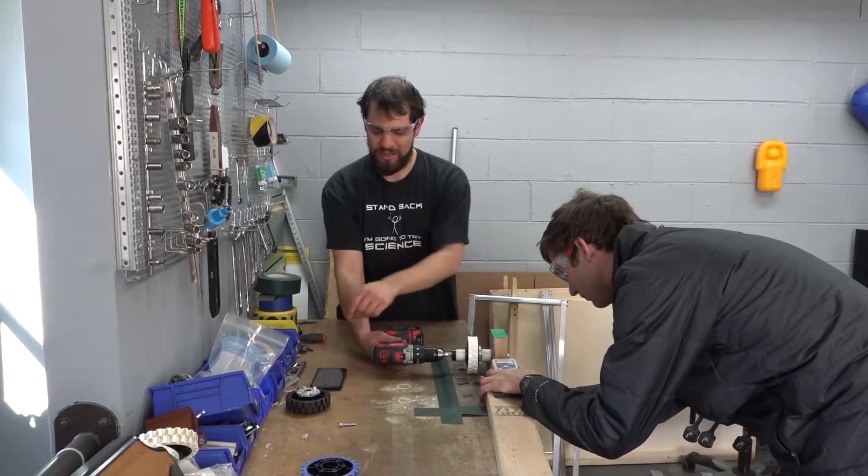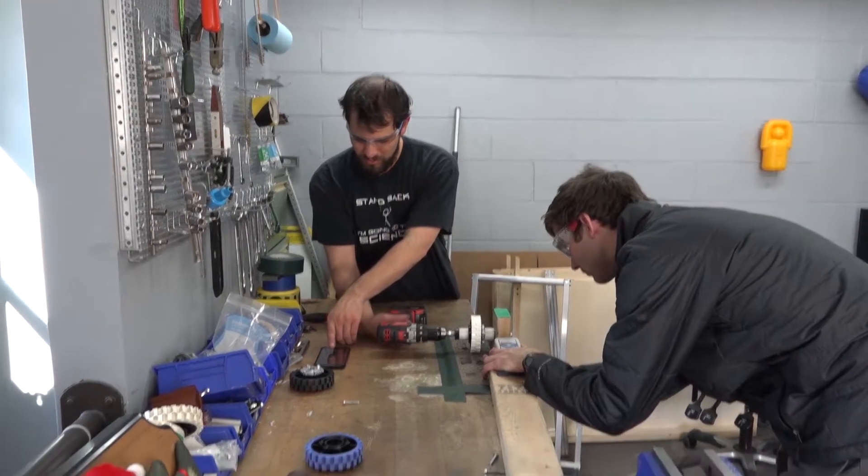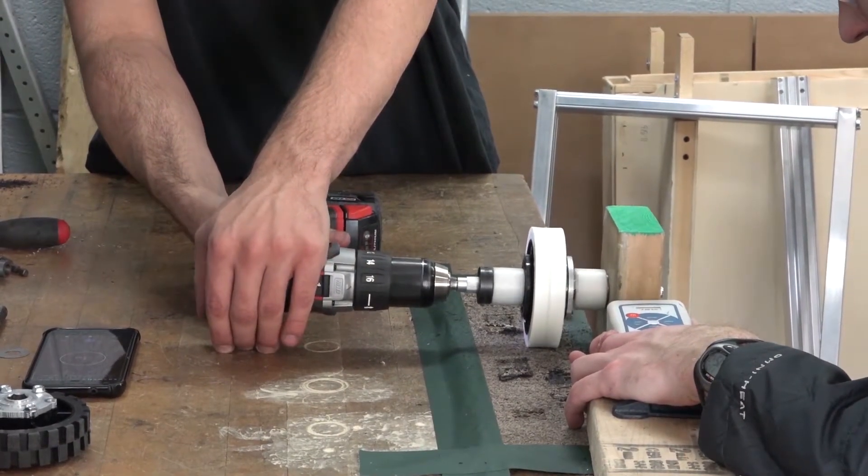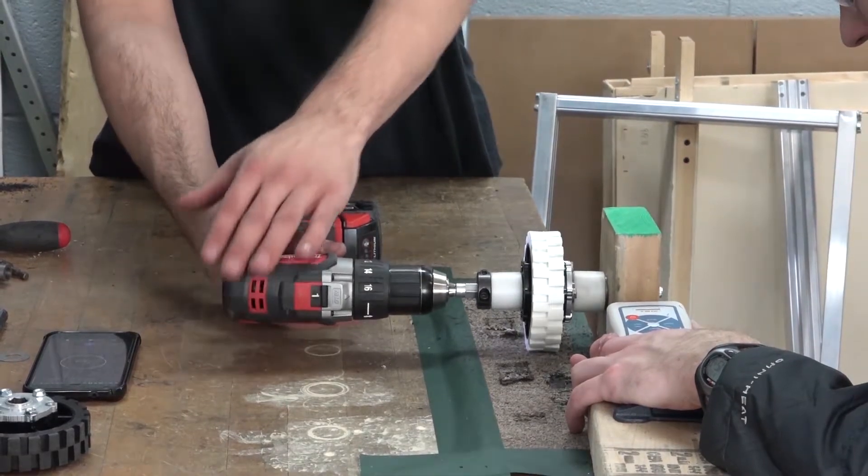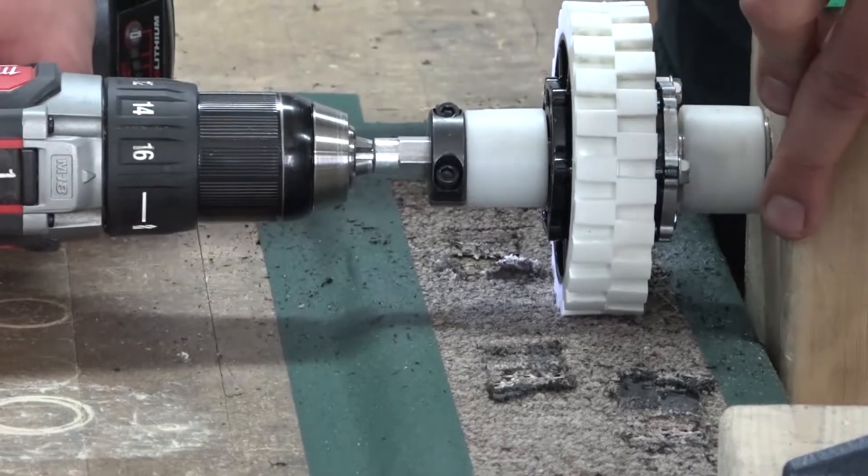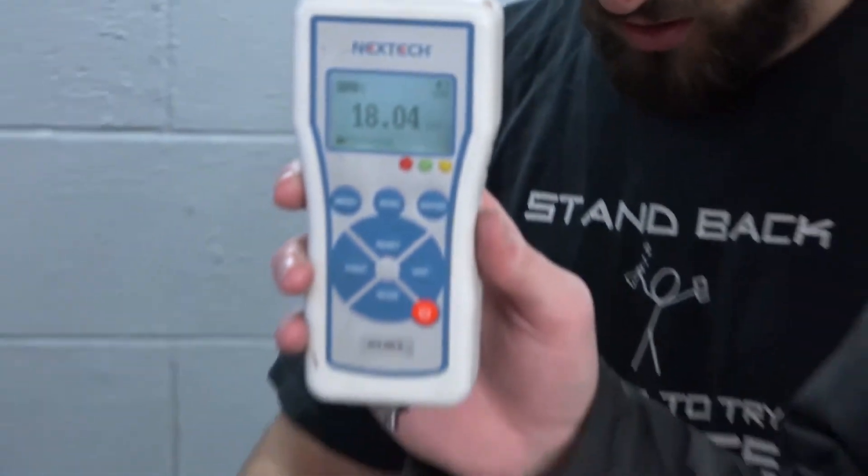The white wheel now. Force gauge. Timer. Three, two, one. Contact. All right. Five seconds. What's the force? 18 pounds of force.